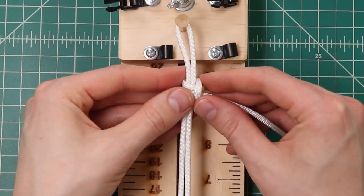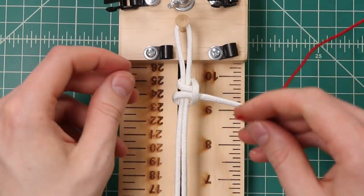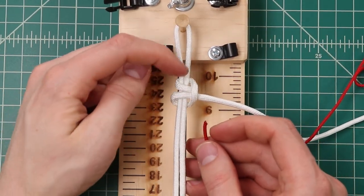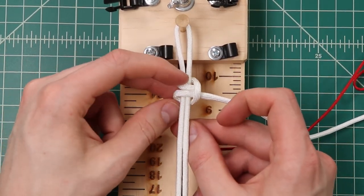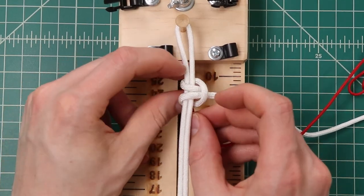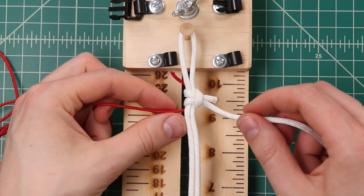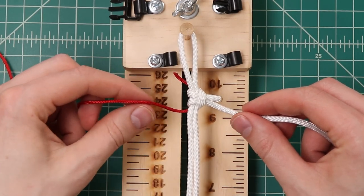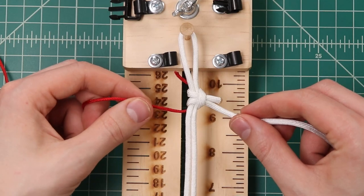We'll loosen that up a little bit to start our red cord. And that's just going to sit right underneath the core strands here. So just bring it up through those two loops of the cow hitch. Once it's tightened down it should look about like this with our white cord on the right side and our 95 red on the left.